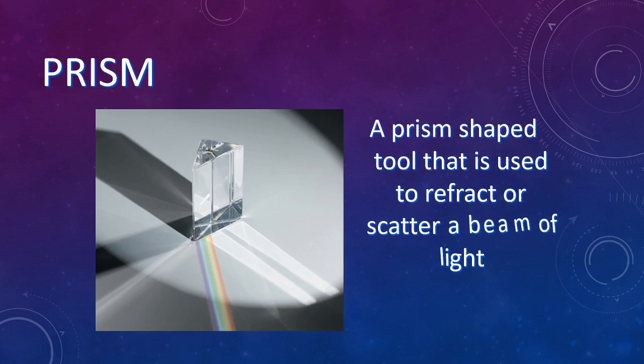Prisms are a tool that allows you to scatter light. In some physical science experiments we would want to control how light comes in and scatter it so that we can see the different wavelengths.